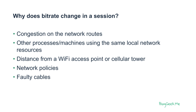It can be faulty cables, and it can also be the available CPU on the machine. The lower the CPU available, the less bitrate we can send, because sending higher bitrates means encoding more, which requires more CPU. There is also encoder and content behavior — if what we're sending is a black screen, we don't need a lot of bitrate. The more dynamic the scene or audio, the higher the bitrate needed.